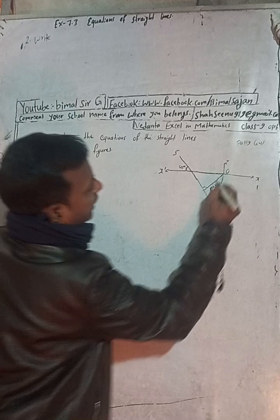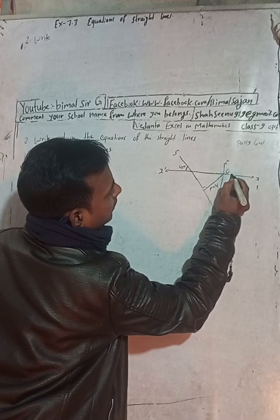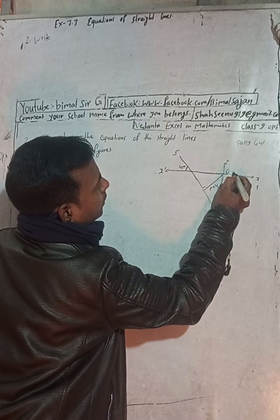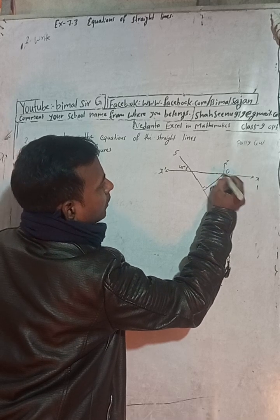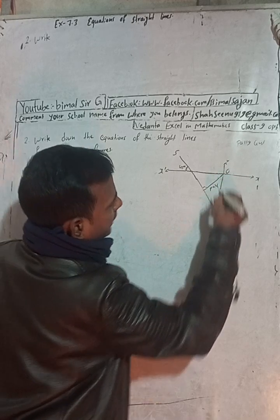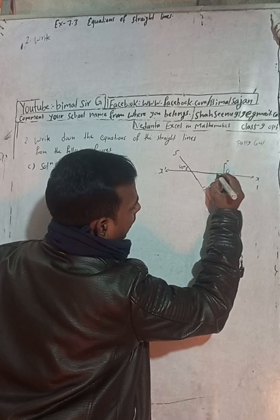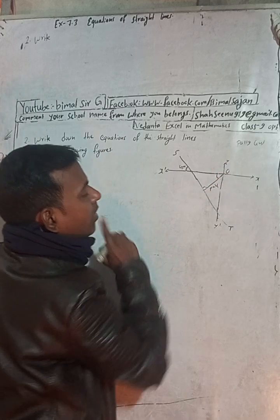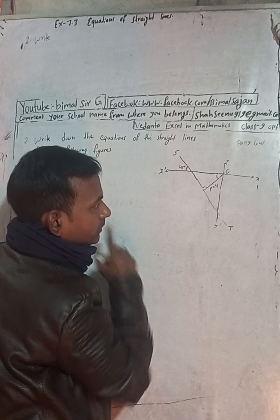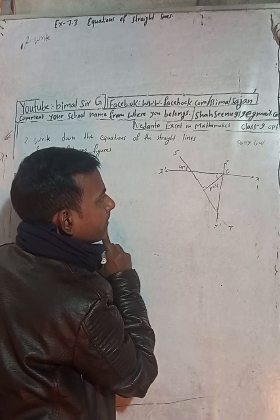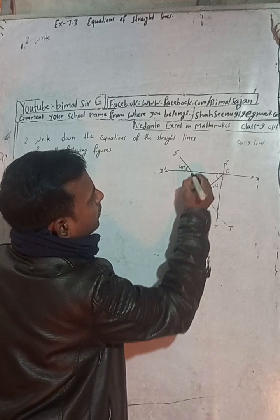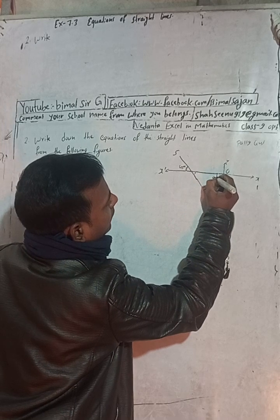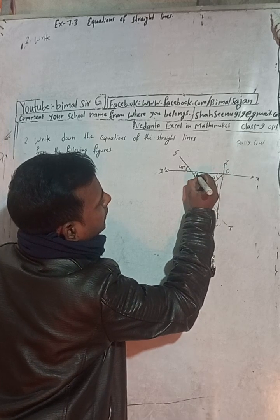Our target is to find this angle, anti-clockwise from here to here. So first we find this angle. I will label this angle — for now this is our A and this is our B, a small b.